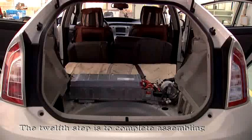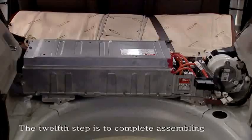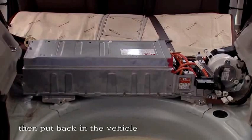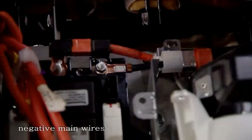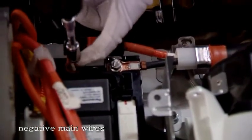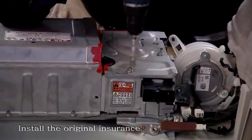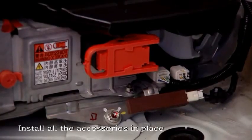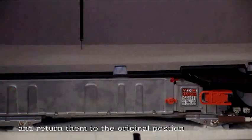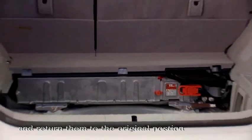The twelfth step is to complete assembling the battery pack AC. Then put it in the vehicle. Correctly connect positive and negative mainwares. Install the original insurance after checking correctly. Install all accessories in place and return them to original position.